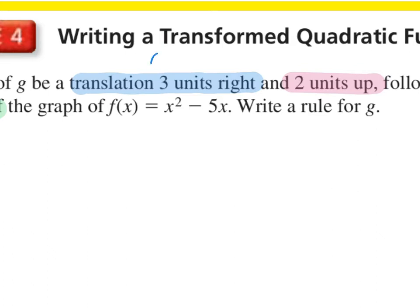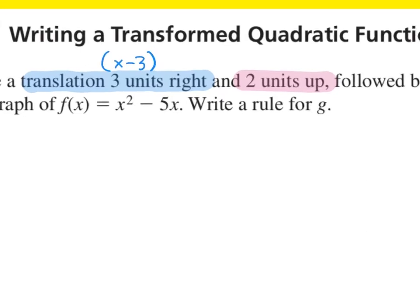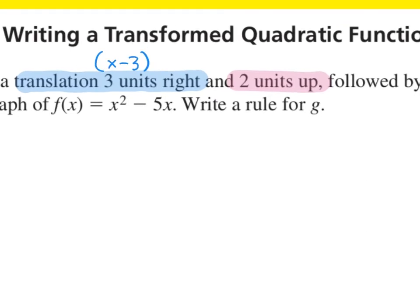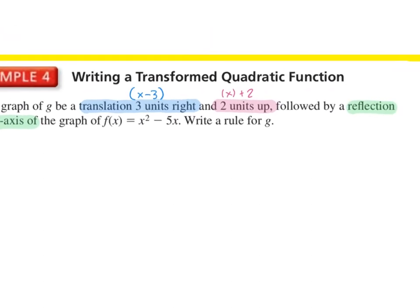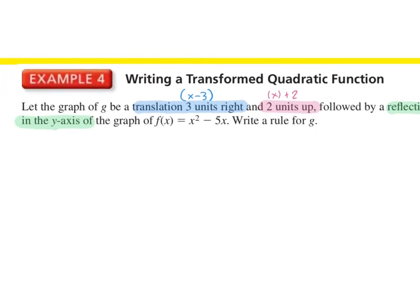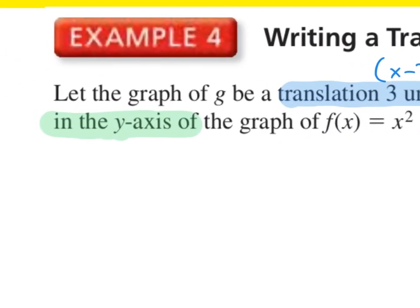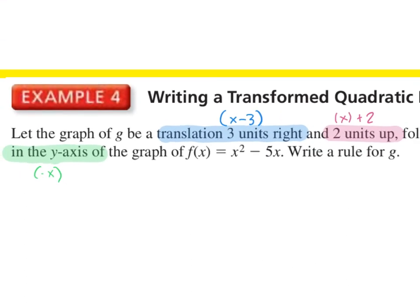How do we show two units up? Plus 2 on the outside. And then a reflection in the y-axis — a negative on the inside. So now we need to apply all three of these to our f of x, which is x squared minus 5x. Instead of just being an x squared with only one x, here we have two x's that we need to plug into.